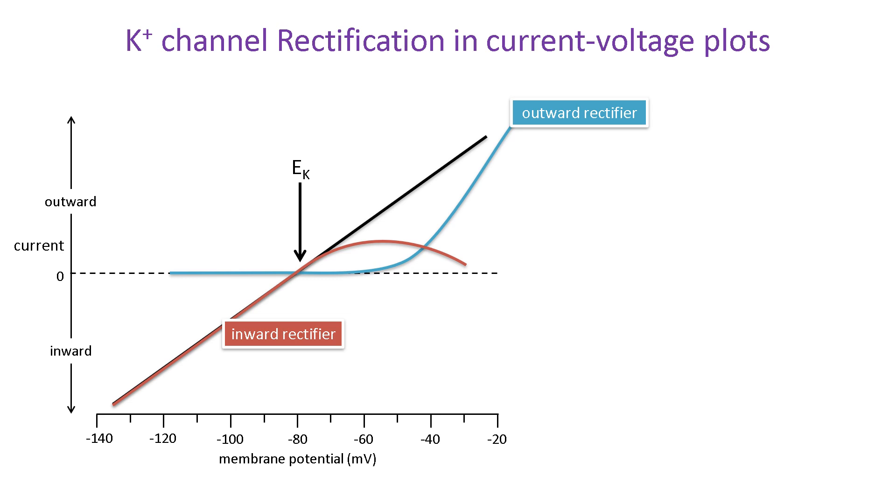The reason is that as the membrane becomes more positive, charged molecules in the cytosol are attracted to binding sites at the mouth of the channel where they bind and block ion flow. The main culprits are magnesium ions and polyamines.